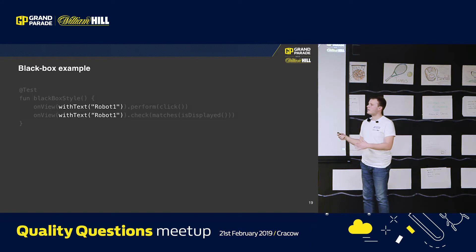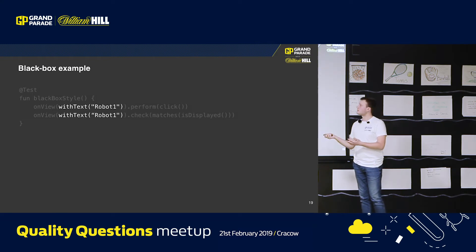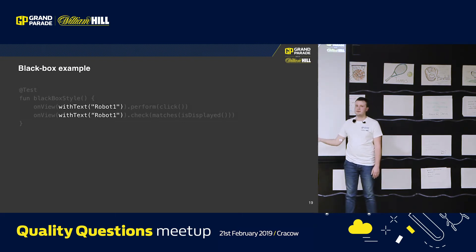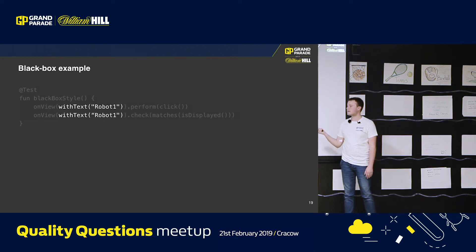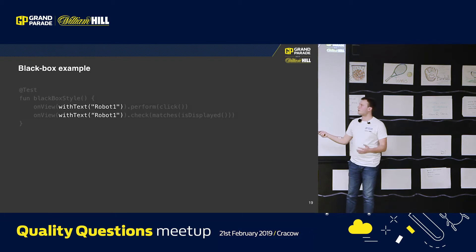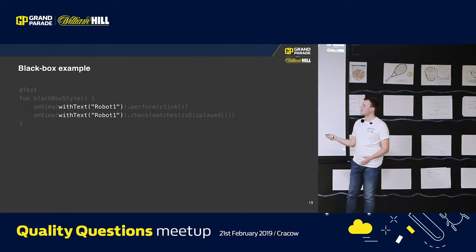Afterwards, when you click a button, some other screen will appear and you want to check, for example, a title — and it will be the same as robot one. But for another person who reads this test, it won't be obvious what you are trying to click or check, because those matchers are the same.